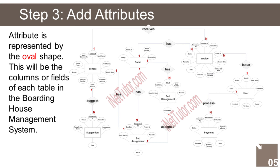The Invoice entity has the following attributes: Invoice ID (Primary Key), Tenant ID (Foreign Key), Room ID (Foreign Key), Room rate, Water bill rate, Electricity bill rate, Total due, Date, Remarks, Status (Paid, Unpaid). The Payment entity has the following attributes: Payment ID (Primary Key), OR number, Payment amount, Date, Proof of payment, Remarks, Status (Pending, Approved, Cancelled). The User entity has the following attributes: User ID (Primary Key), Username, Password, Avatar, Full name, Contact, Email, Status.